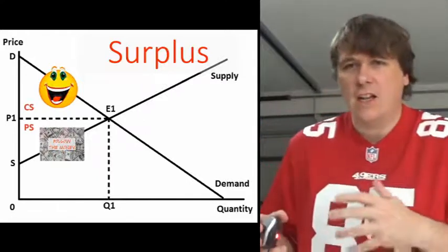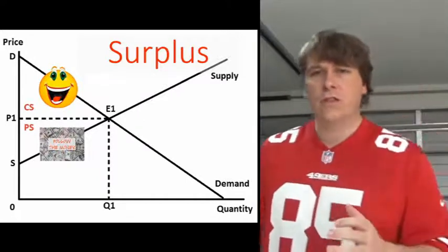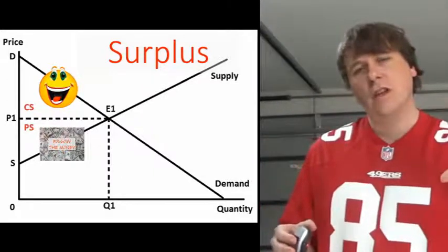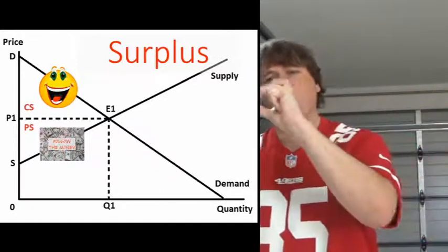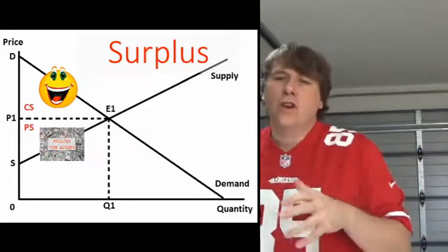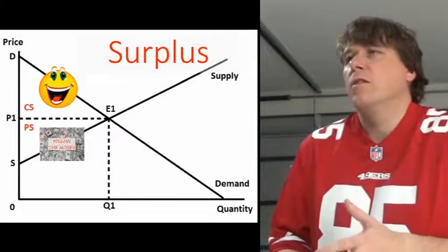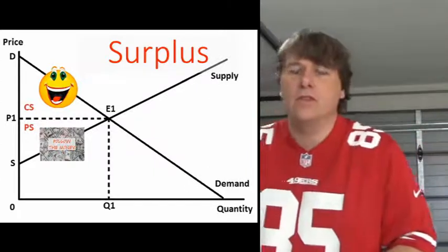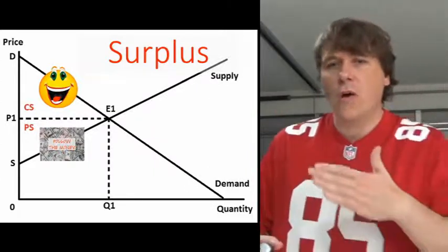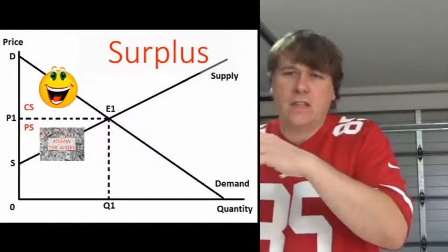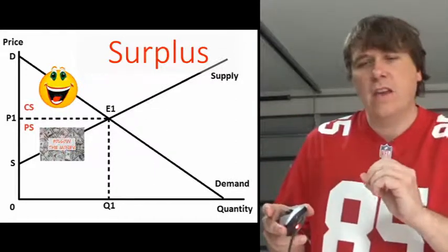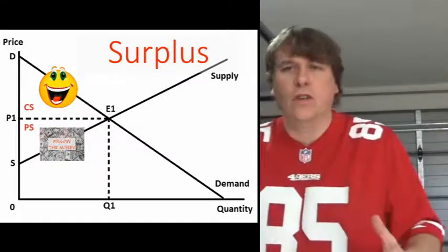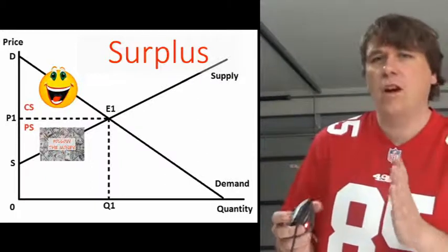Consumer surplus gets smaller and smaller as you approach the equilibrium, and below that price people stop buying because their willingness to pay is lower than the price. On the other hand, producer surplus is the area below the supply line. If your cost is two dollars and the selling price is four dollars, you get a producer surplus of two dollars. As costs rise closer to that four-dollar mark the surplus disappears, and if you can only produce something at six dollars when the price is four, you won't produce at all — that's your cutoff point.